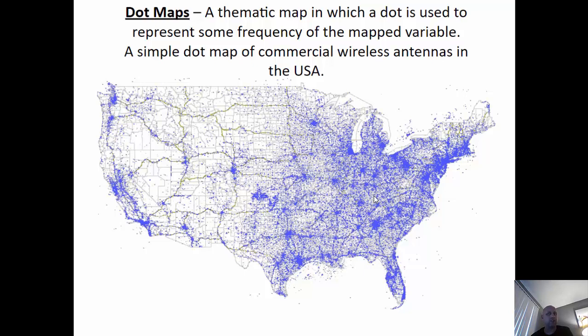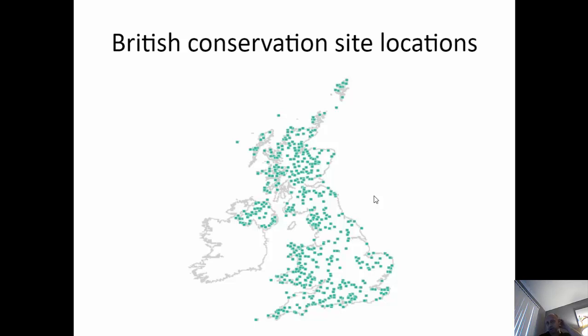Dot maps are a thematic map in which a dot is used to represent the frequency of whatever is being mapped, with each dot representing one of the things being measured. For instance, this is a dot map showing where commercial wireless antennas are located — cell phone reception. Every dot indicates a spot where an antenna is located, and not surprisingly, they tend to be in large cities. That helps explain why when you travel through the middle of rural Utah, you run out of cell phone service. Here's another dot map of Great Britain showing British sites being conserved for historical or environmental reasons — each dot is a different site.